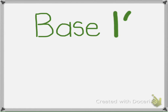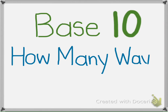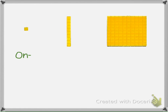Our number system is built on the idea of 10. To fully understand place value, you need to see how the pattern of 10 repeats within numbers, and how it is used to build numbers. We can show or represent numbers using special tools called base 10 blocks.